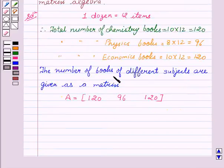The number of books of different subjects are given as a matrix A which is equal to matrix 120, 96 and 120.